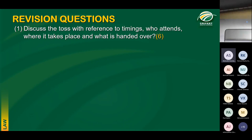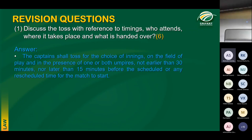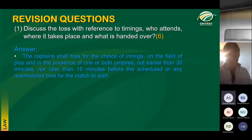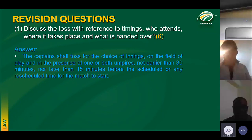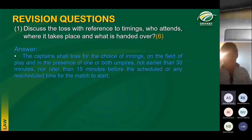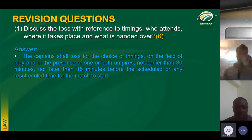The first Monday revision question: regarding the toss and with specific reference to timings, who needs to be there, where does the toss take place, and what is handed over at the toss? The captain needs to be present. Either one or both umpires need to be at the toss. It can take place anywhere on the field, though it is customary to toss next to the mast. The window period for the toss, if the game starts at 10 o'clock, is from 9:30 until 9:45.